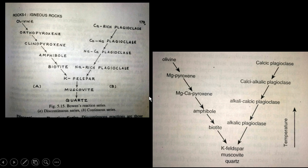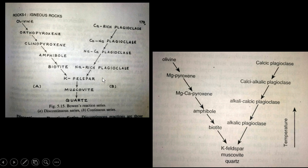This is the same Bowen's Reaction Series with different nomenclature. Here, pyroxene is subdivided into orthopyroxene (Mg-pyroxene) and clinopyroxene (Mg-Ca pyroxene). In the continuous reaction series, we have Ca-plagioclase (calcic plagioclase) transitioning to calcic-alkali plagioclase. As temperature decreases, the Na content increases and the Ca content decreases, going from anorthite down to albite, then orthopyroxene, clinopyroxene, amphibole, and biotite.